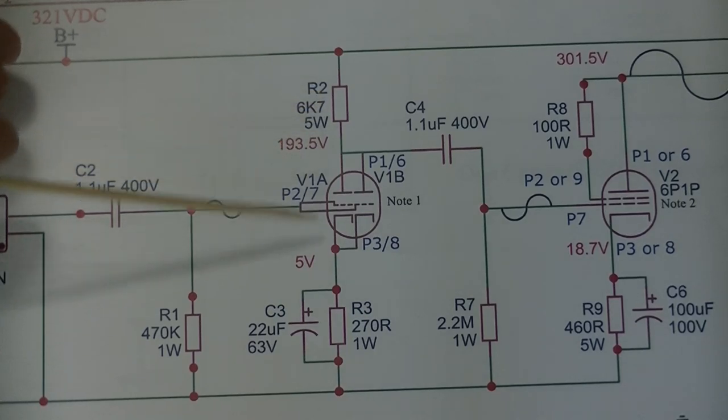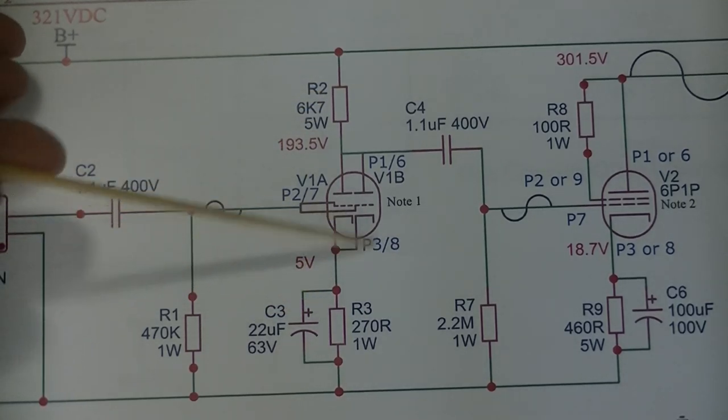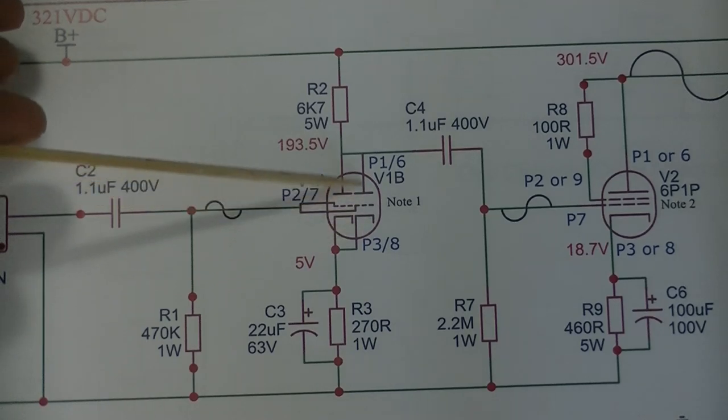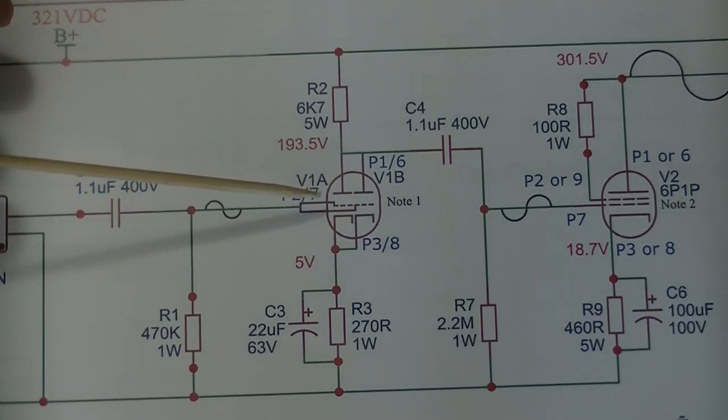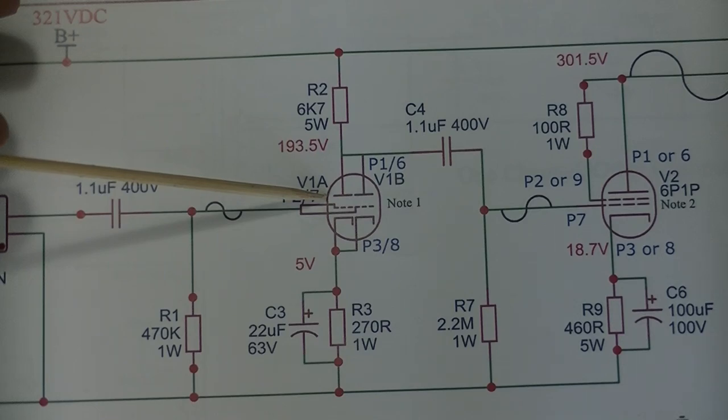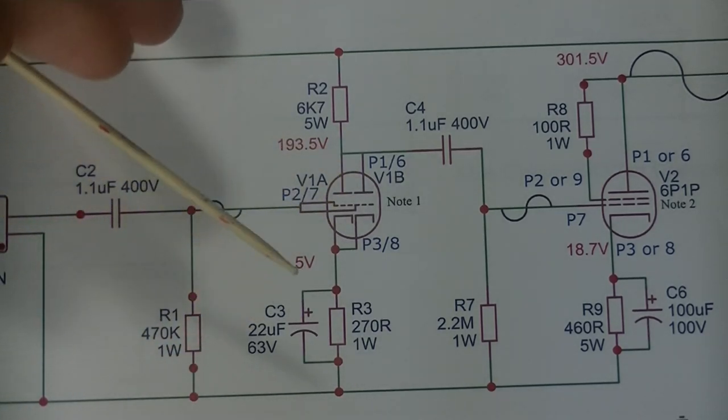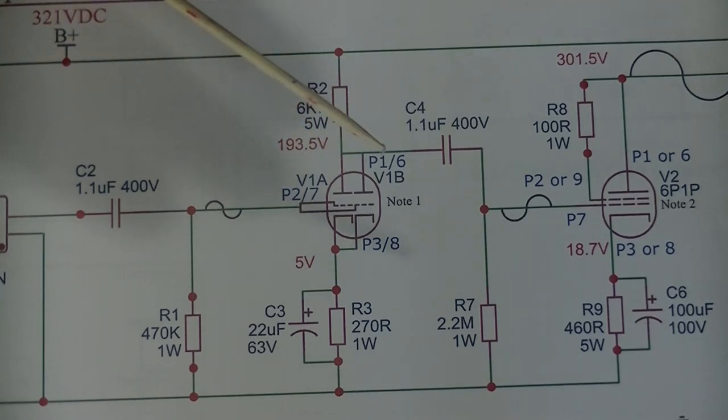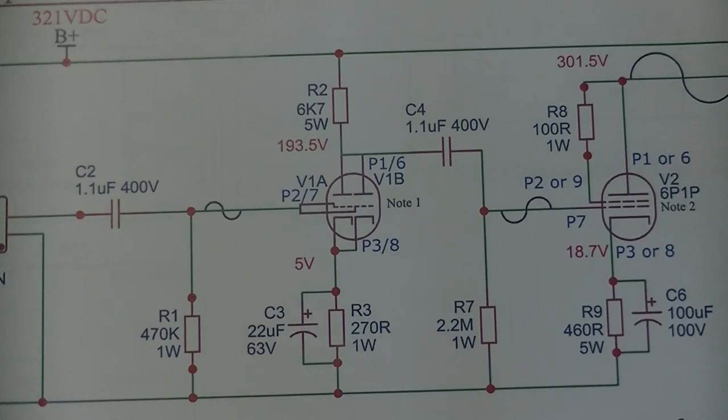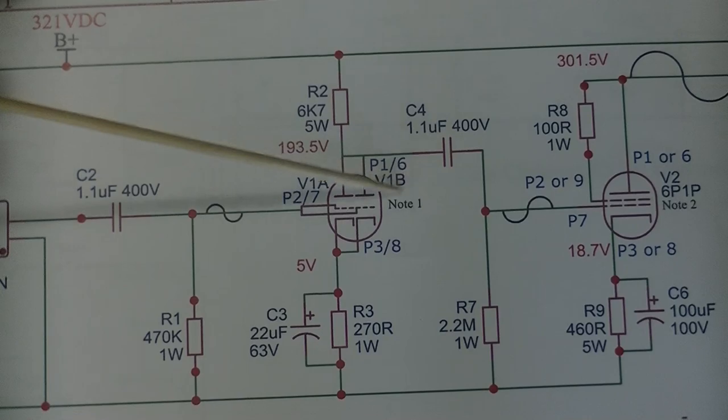Also, because of the way that we biased it here, this tube can be one of any number of different types. We talked about this a little bit before in the last video. But it can run the 6DJ8, the 12AU7, the 6N1P, the 12BH7, 6CG7. There's a huge number of different tubes that this can run.